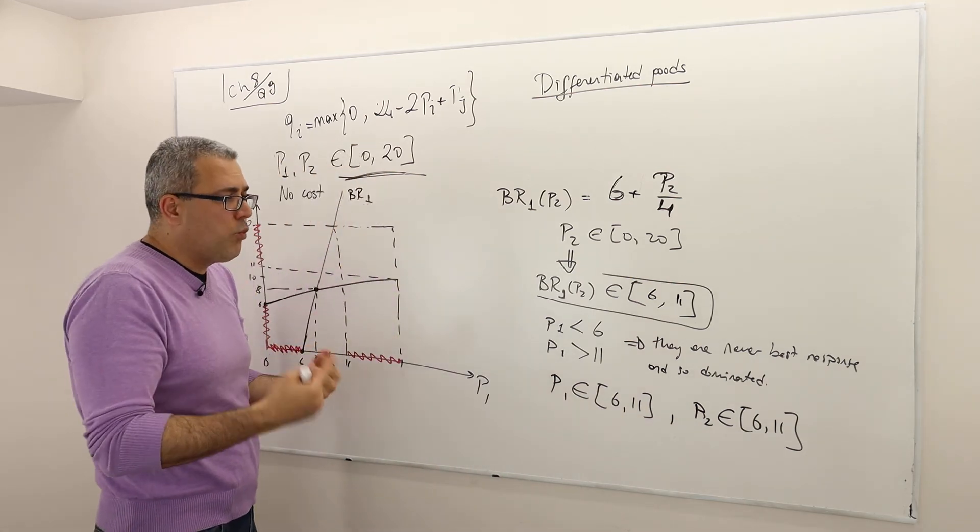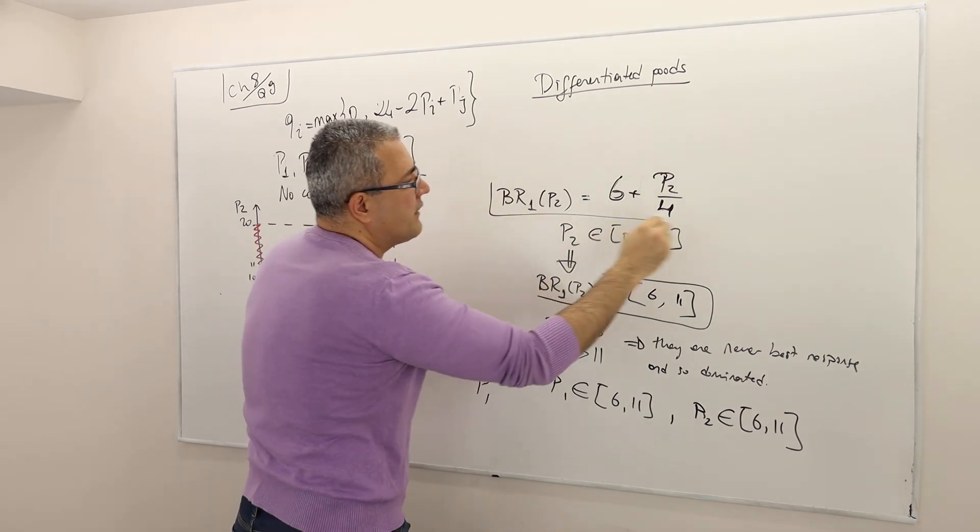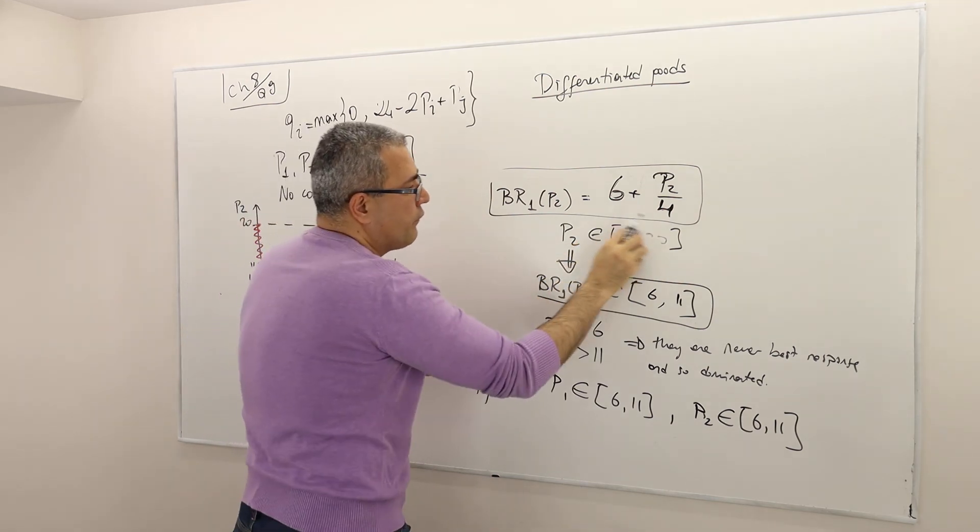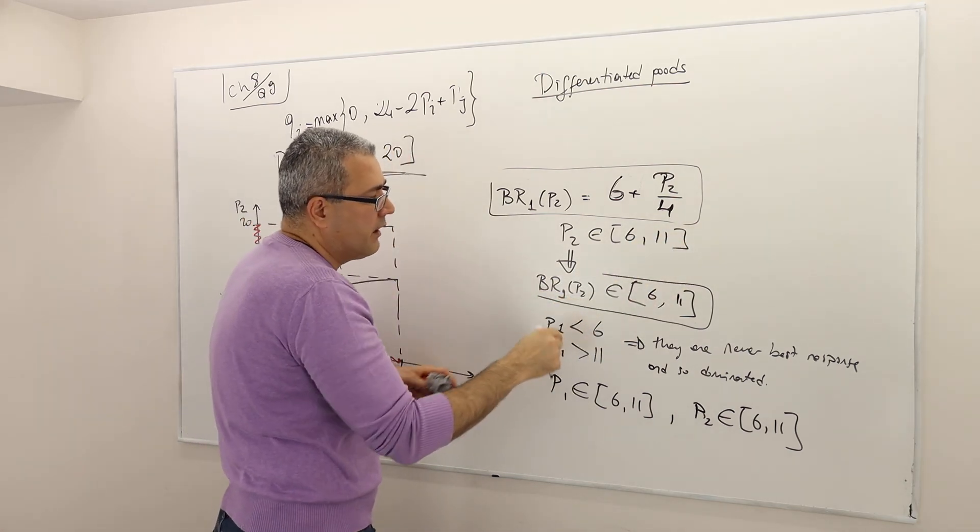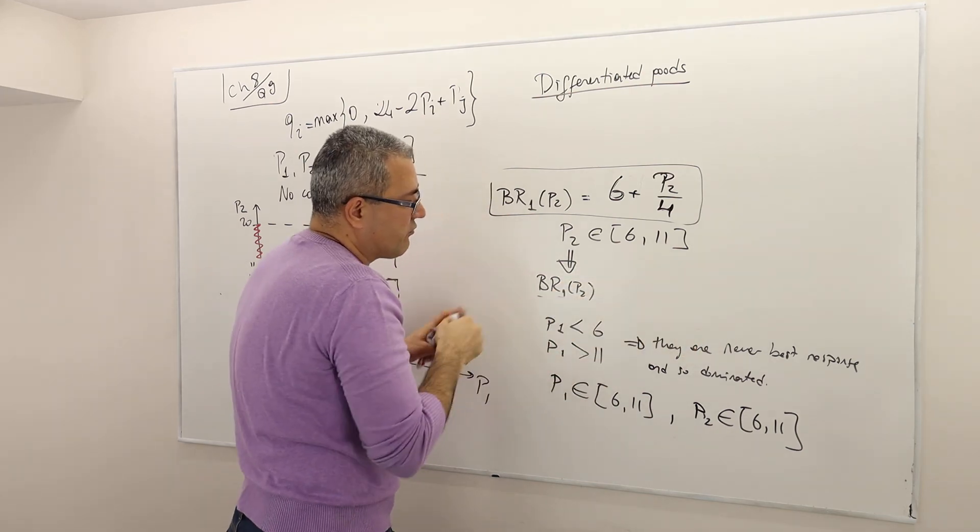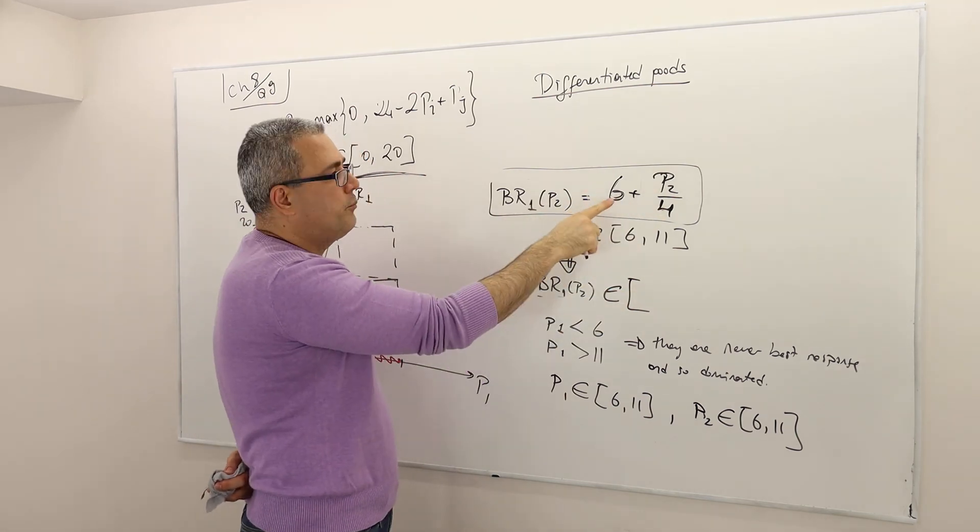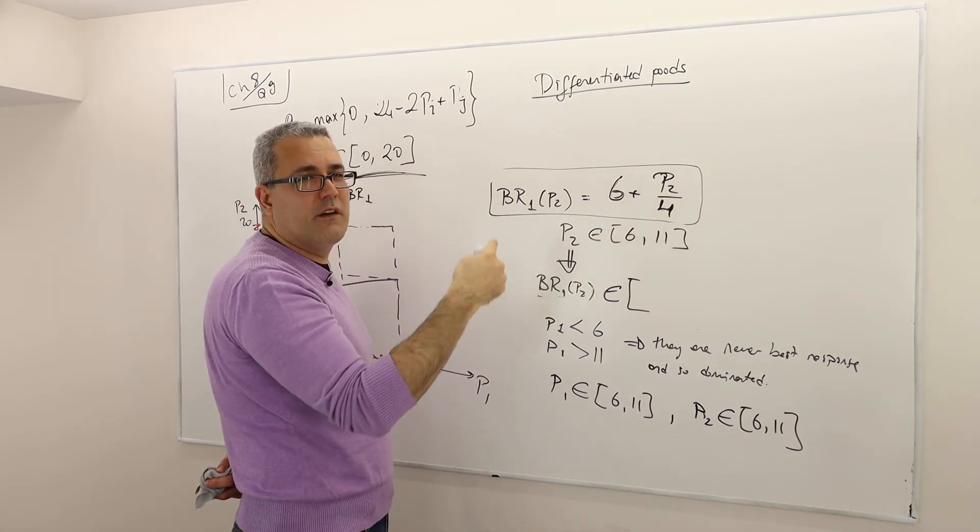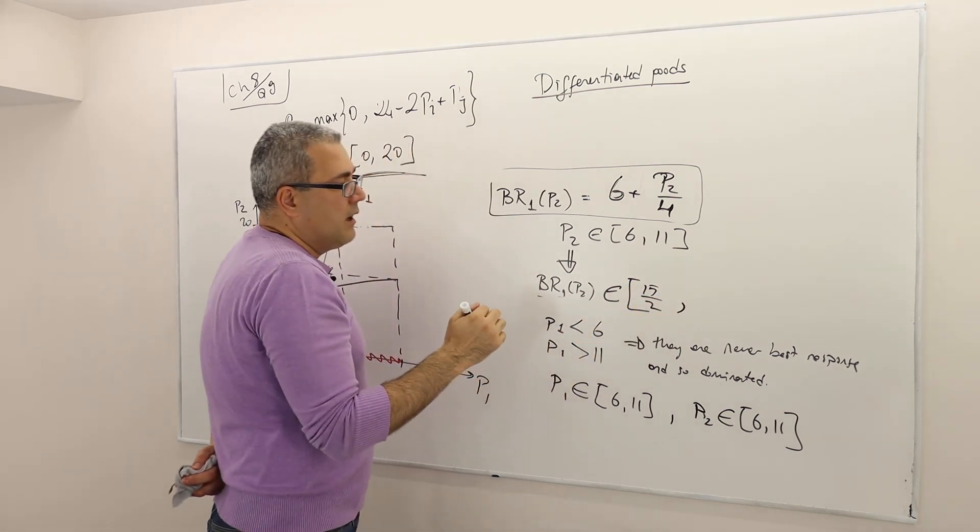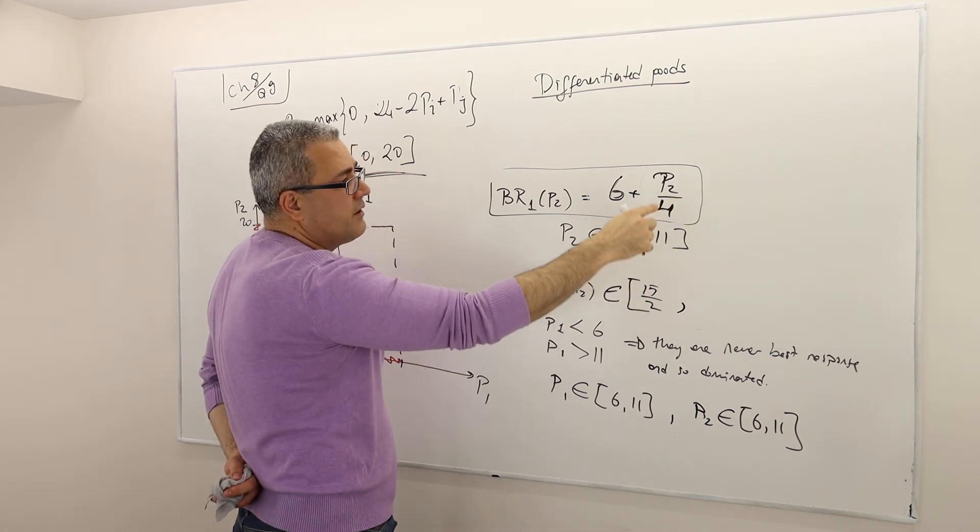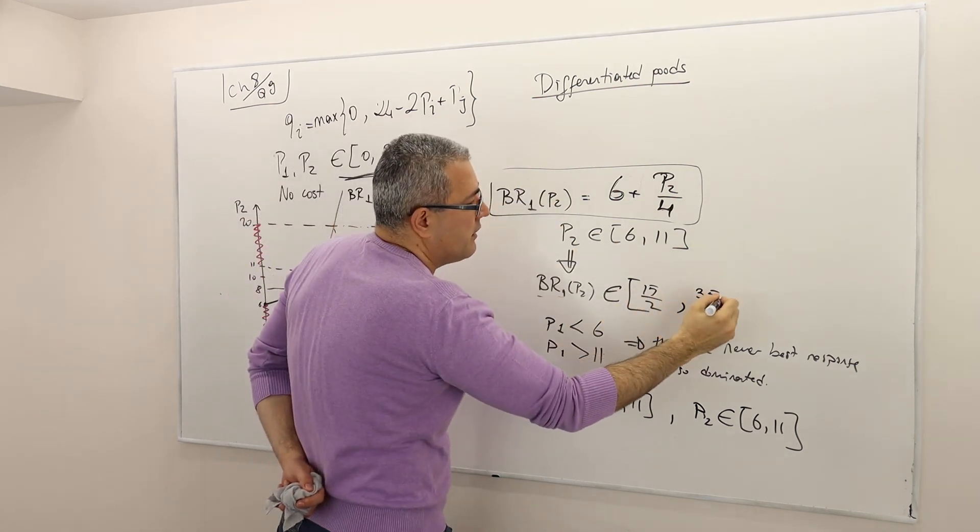Now I can iterate one more step. How so? Once again, remember, this is how I started. Given that this is the best response of firm 1, and given that the price of firm 2 has to be coming from this range, 6, 11, the best response for firm 1 is actually going to be in this range. Let's calculate this range. The lowest price is 6, which corresponds to what price? 6 divided by 4, it's like 3 divided by 2, plus 6, it's 15 divided by 2, I guess. The highest price is 11, so it's 11 divided by 4, plus 6, so it's 24, 11, 35 divided by 4.